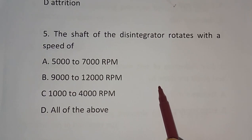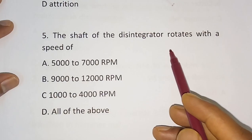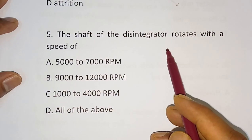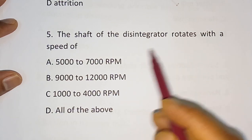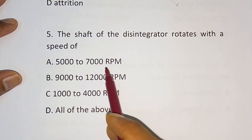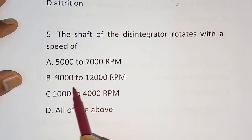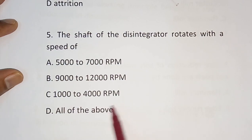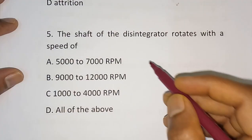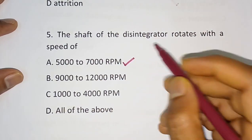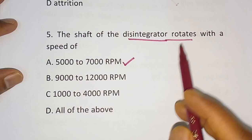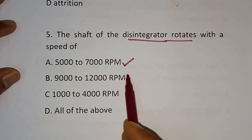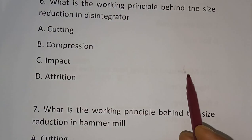Question number 5: The shaft of the disintegrator — which is also a size reduction equipment — rotates with a speed of which option? Option A - 5000 to 7000 rpm. Option B - 9000 to 12000 rpm. Option C - 1000 to 4000 rpm. Option D - All of the above. The correct answer is 5000 to 7000 rpm.